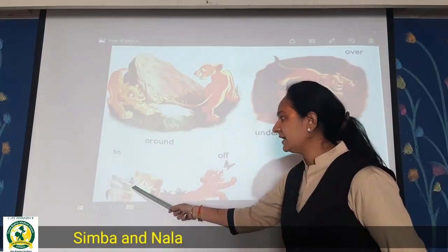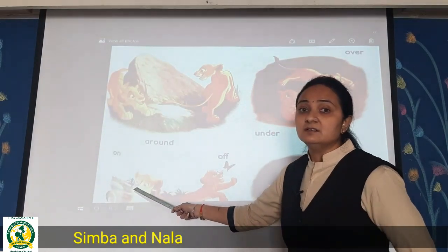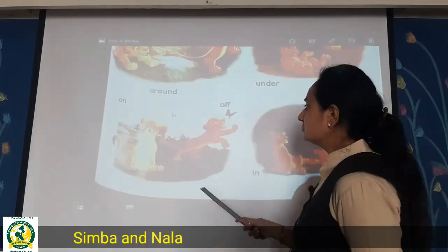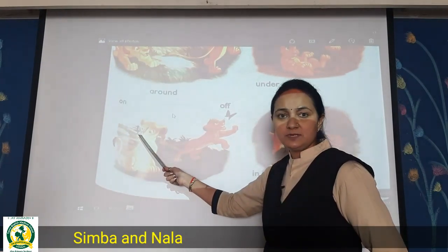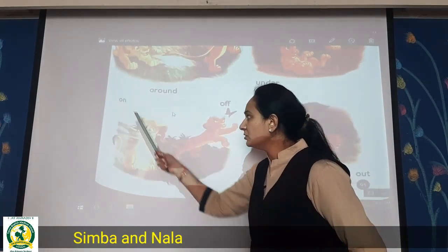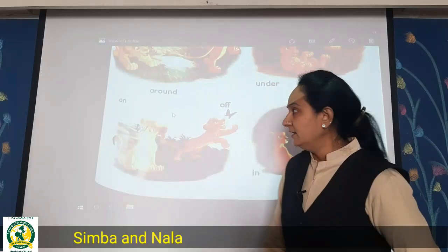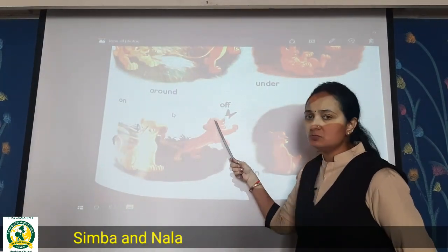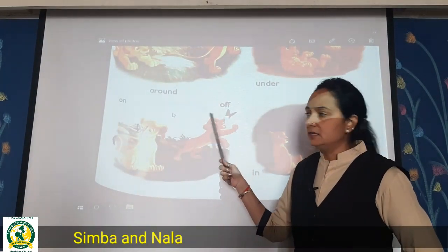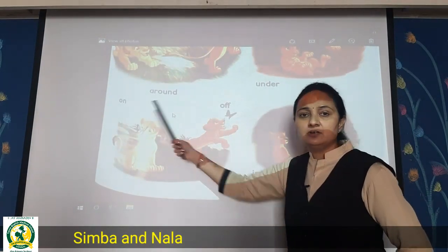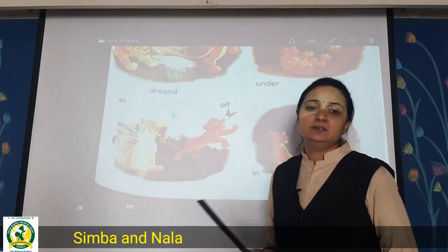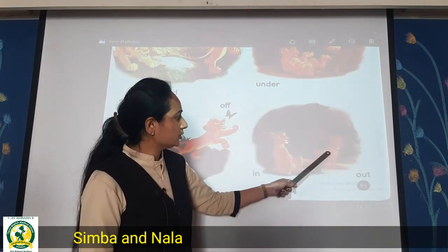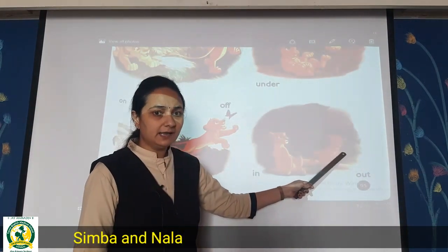You can see one butterfly is on the nose of Simba. This butterfly is on the nose of Simba, and this butterfly is off — it has flown away. On, off. Now you can see Simba is in — inside — and Nala is out, outside. In, out.